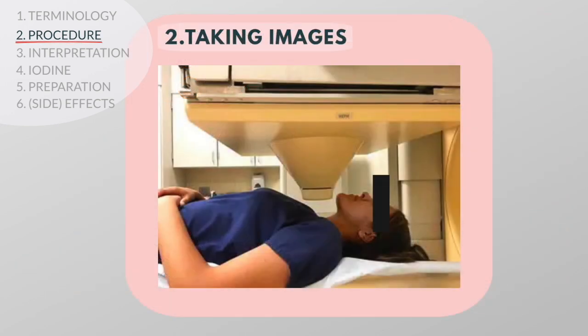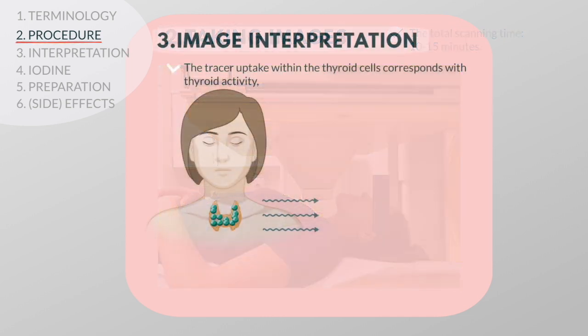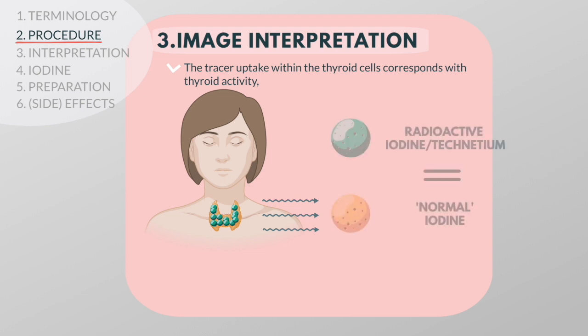When the patient has a thyroid scan, he or she will be lying down on a bed and the camera will be positioned very close over their head. The total scanning time is about 10 to 15 minutes. The tracer uptake within thyroid cells corresponds with thyroid activity, as the radioactive tracer mimics normal iodine uptake in the gland.